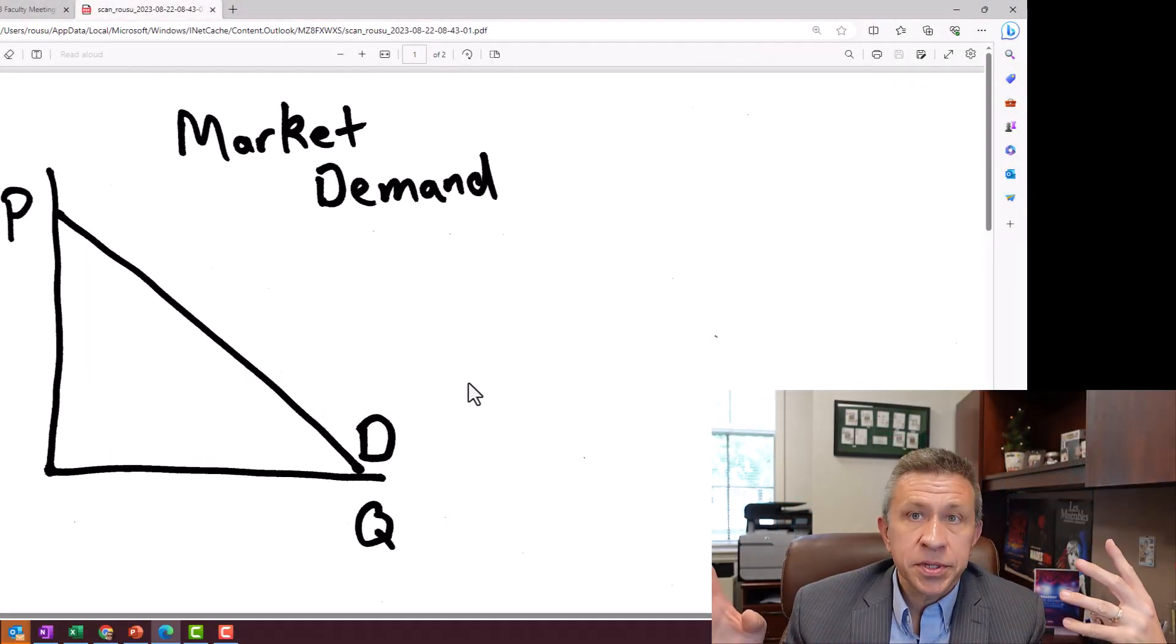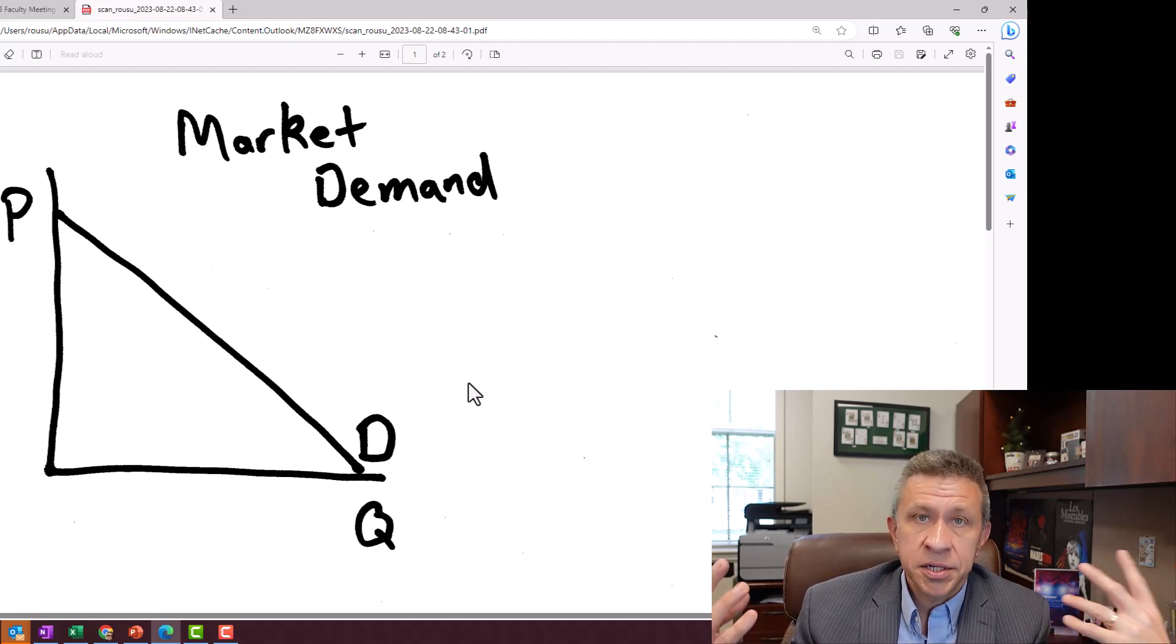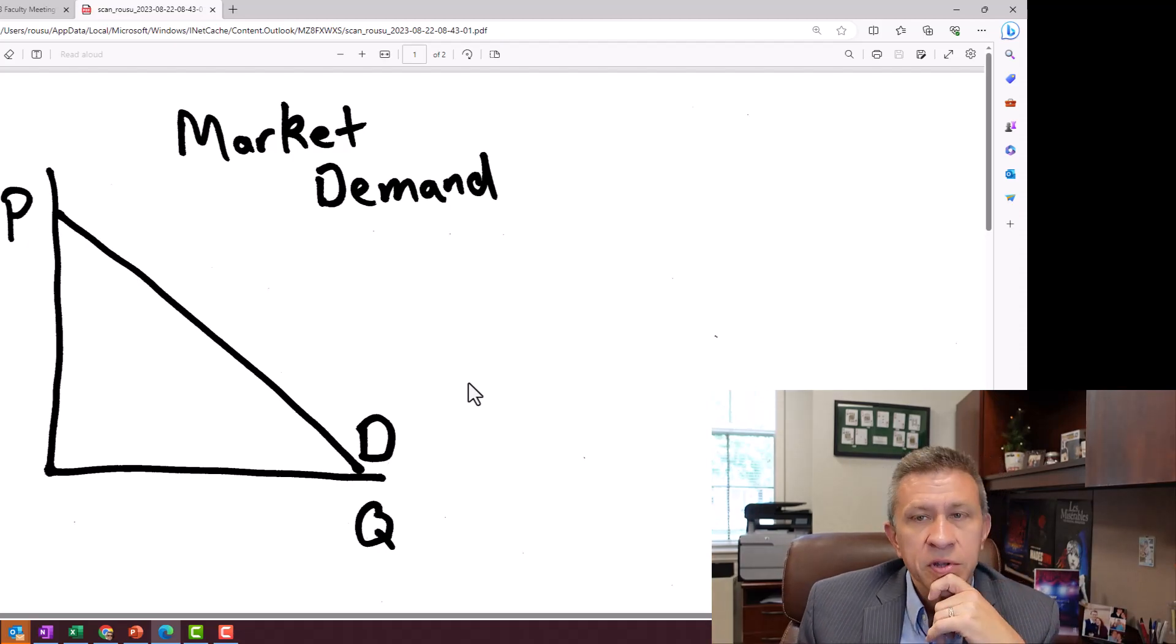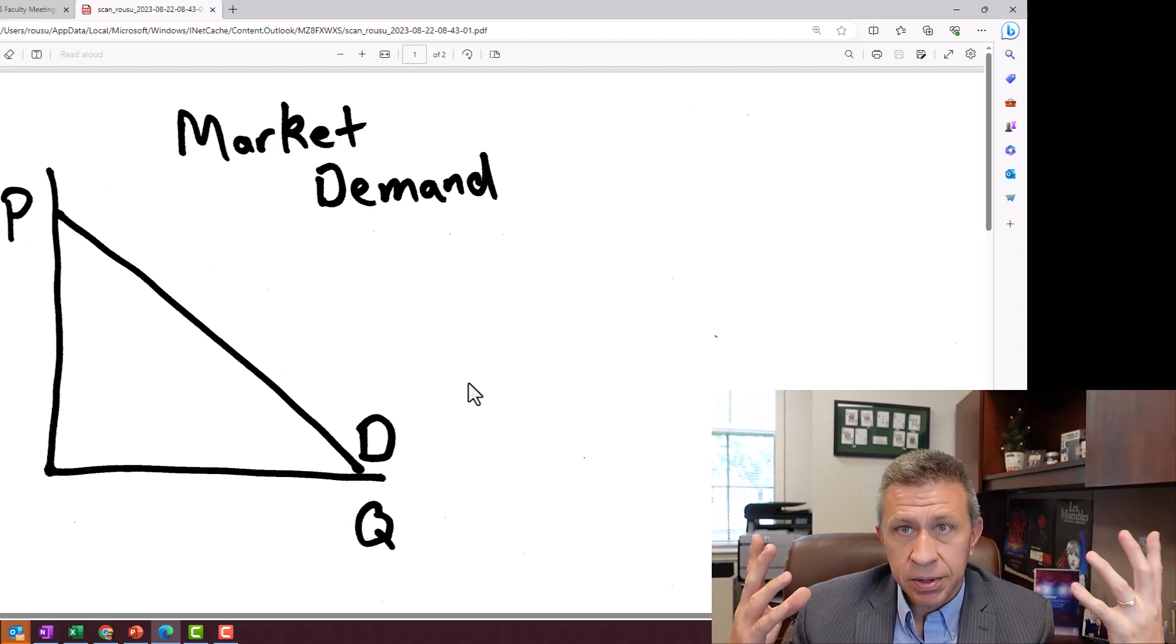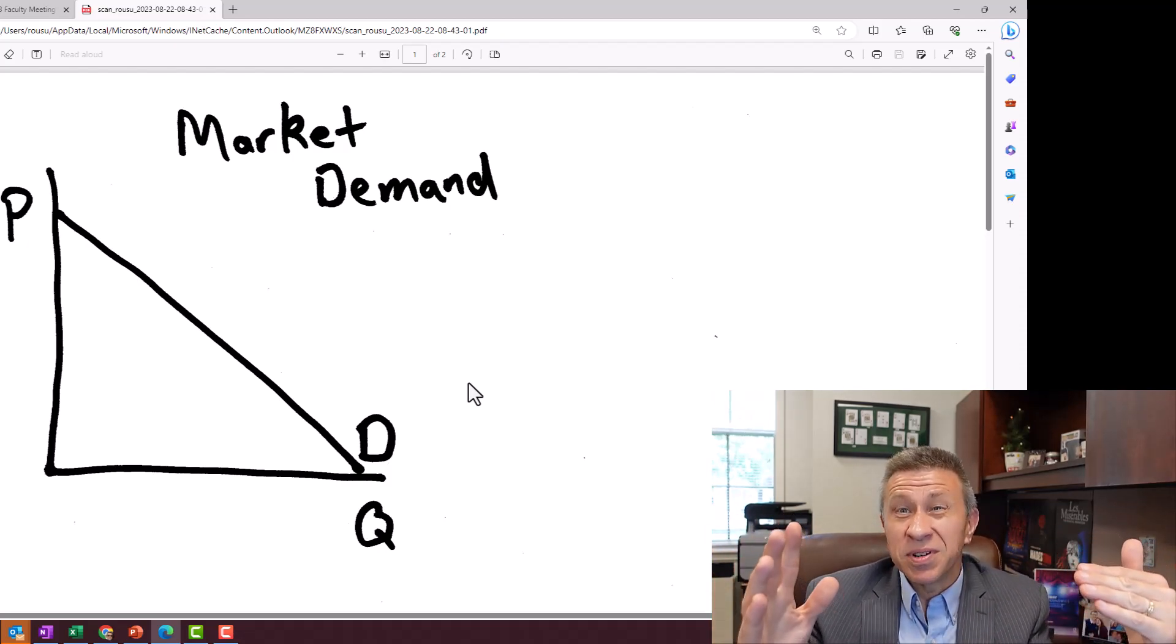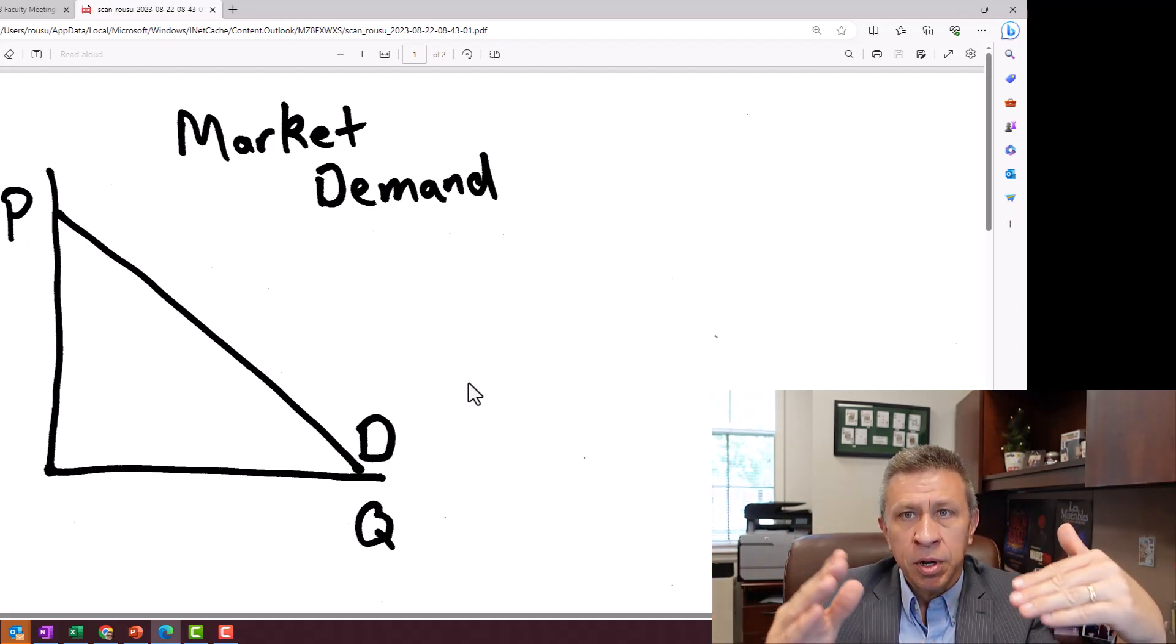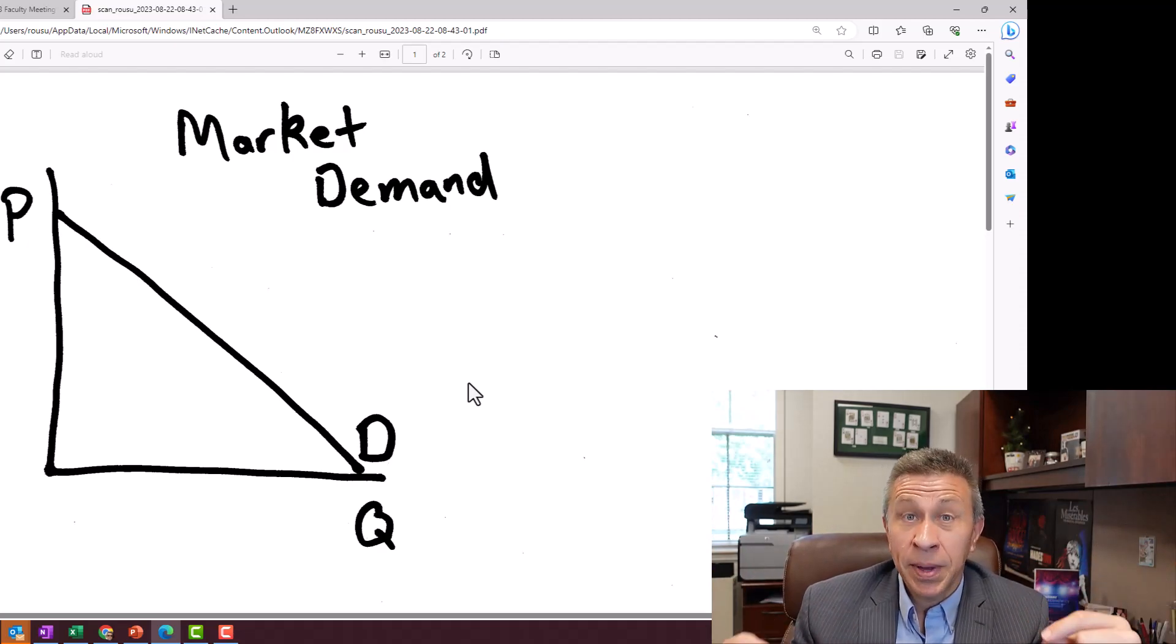On the screen, you see a very simple demand curve just showing market demand. For those asking, no, I don't hire professional artists—I know you're stunned. It looks so beautiful. But simple demand curve, downward sloping. If you had a monopolist, they would see this entire market would all be theirs to figure out what's the profit maximizing point based on their cost structure.